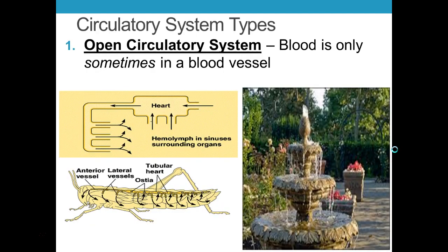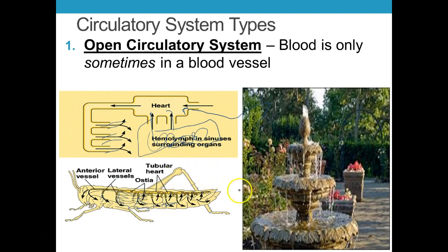With animals that do have circulatory systems, there are a couple of different types. The first is called an open circulatory system, where blood is not always in a blood vessel — sometimes it is, sometimes it isn't. The heart collects blood and pumps it out through little tubes into the body cavity, delivering nutrients and collecting waste, then the heart collects it again and pumps it out again. A fountain is a good analogy: water pours over it, gets collected by a pump, pumped back out to the top, and comes back down.